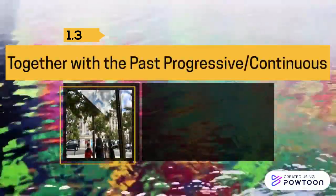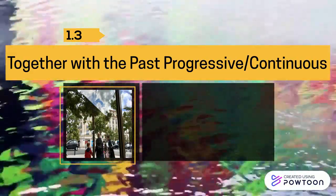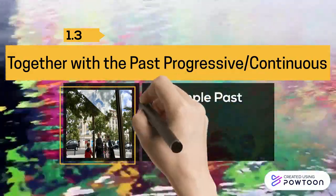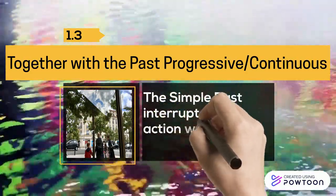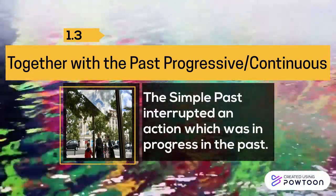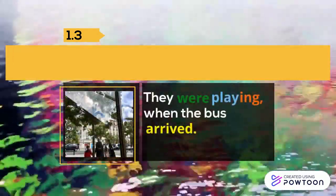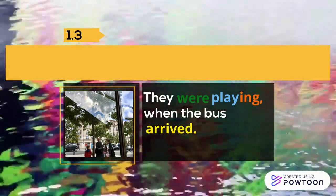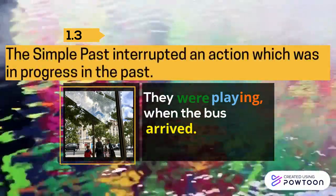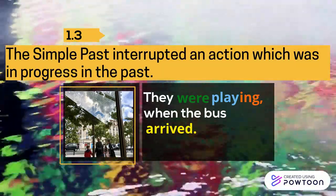We can also use the simple past together with the past progressive, or the past continuous as you wish to call it, when the simple past interrupted an action which was in progress in the past. I have an example for you: They were playing when the bus arrived. So the simple past interrupted an action which was in progress in the past.